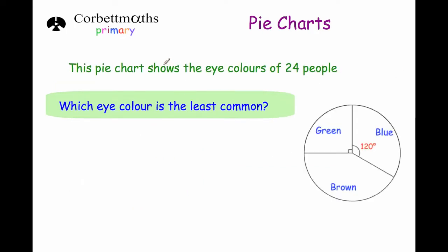Our next question shows us a pie chart with the eye colours of 24 people. So we've got green, blue and brown. The first question says which eye colour is the least common? As you can see green is the least common because it's the smallest section, meaning the least number of people are going to have green eyes. So green.